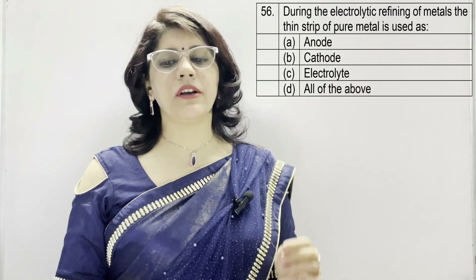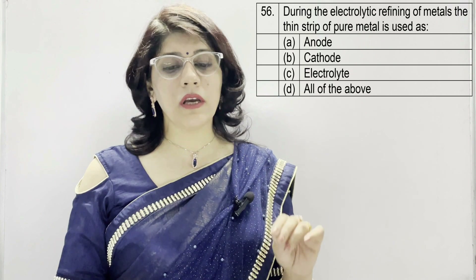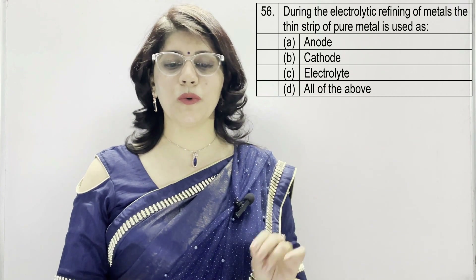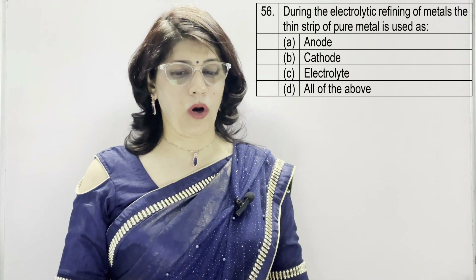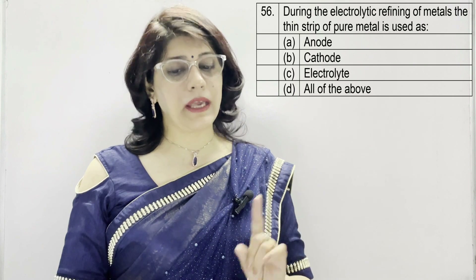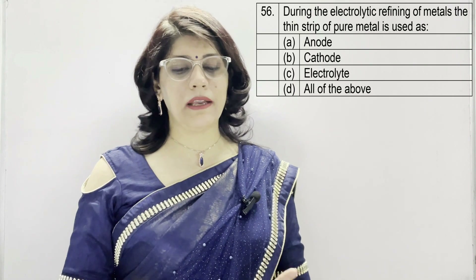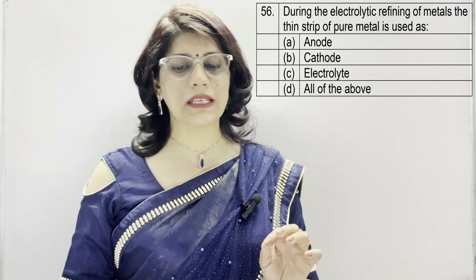In question number 56: during the electrolytic refining of metals, the thin strip of pure metal is used as — A: anode, B: cathode, C: electrolyte, D: all of the above. The correct option is cathode.